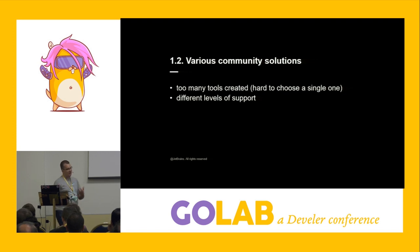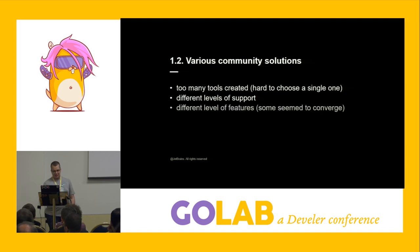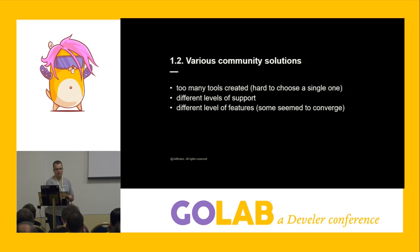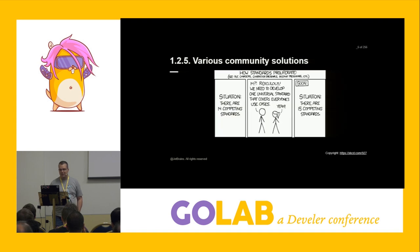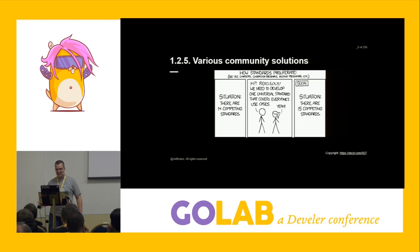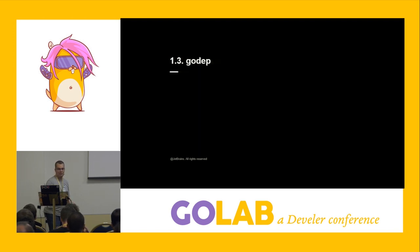Some of them had different levels of support — some were more maintained, others were abandoned. That was not a good place to be in. But eventually, most of them were converging towards the same feature level. There was no clear winner. And if you know the XKCD on this one, it's basically: there are 14 different standards, let's make one standard to cover them all. That was the state of the art back then.